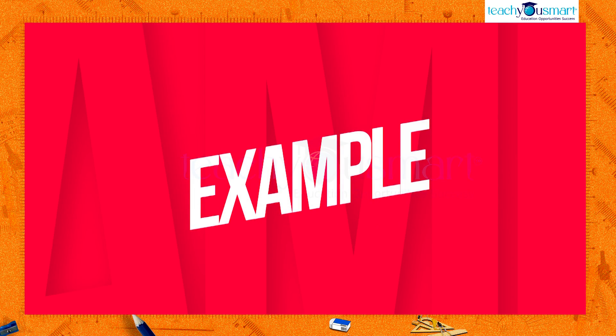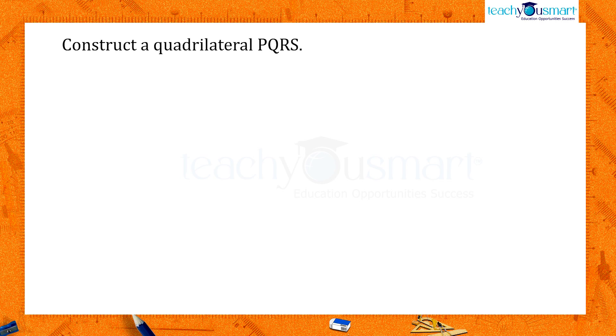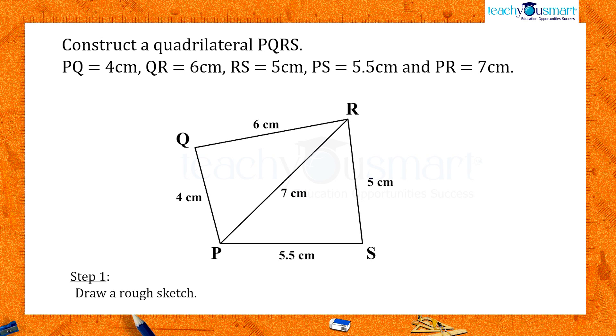Let's see an example. Construct a quadrilateral PQRS. First of all, we can visualize drawing a rough sketch with PS equals 5.5 cm, RS equals 5 cm, PQ equals 4 cm, QR equals 6 cm, and PR equals 7 cm.